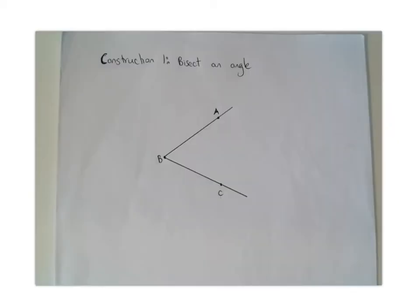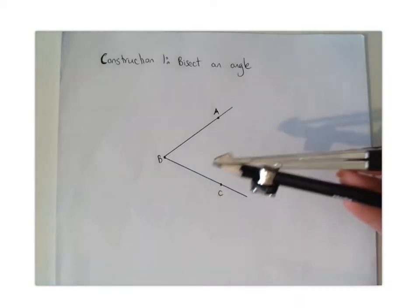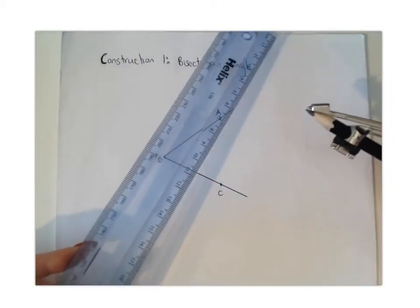So to complete construction number one we are going to look at how to bisect an angle. In order to bisect an angle you're going to need your compass and you're going to need your straight edge, which is your ruler.